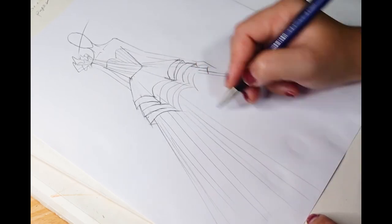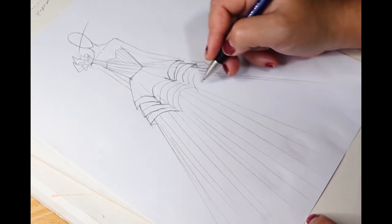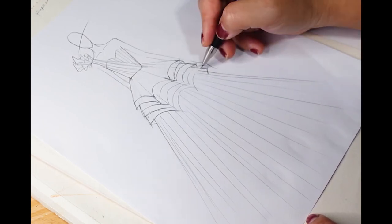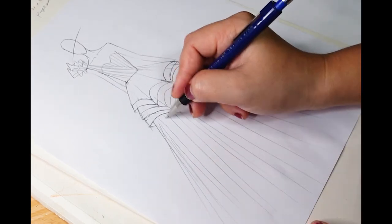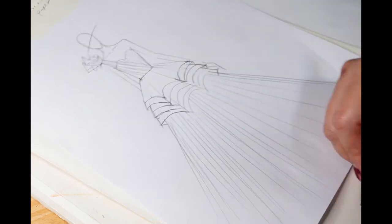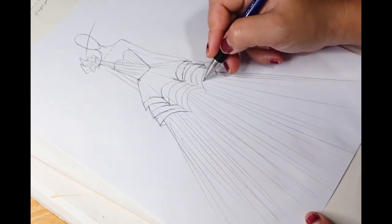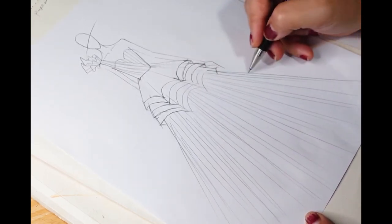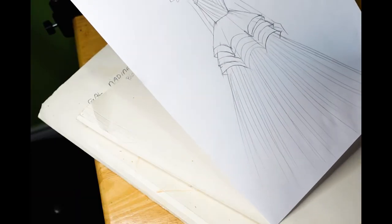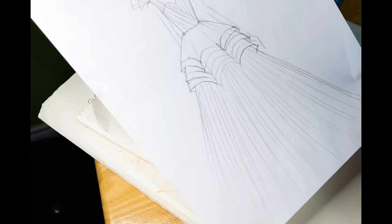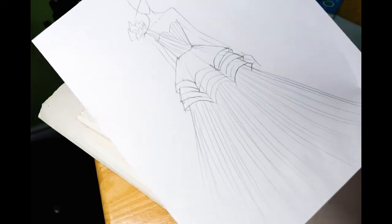For the materials, I just need tulle, lining, and of course the horsehair, some zippers, threads, and some boning, but that's optional. And this is the overall look for this gown, this is what I want to achieve.